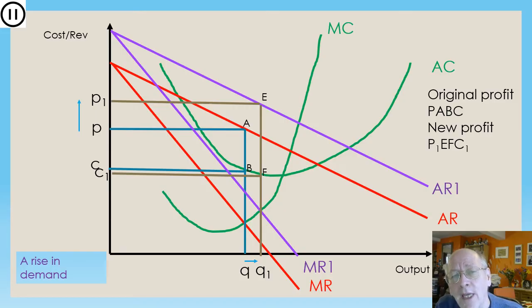For profit, we need to follow that quantity down to the average cost curve. So I finish up with an average cost of C1. Sometimes C1 is above C, sometimes it's below C. Occasionally it will be exactly the same as C. Doesn't matter. We are looking for the average cost curve. And the total profit is that brown rectangle, P1EFC1.